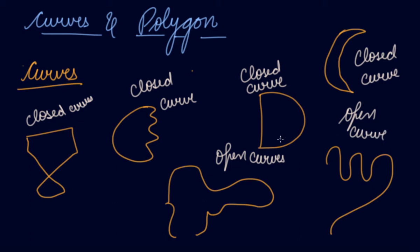Basically, there is some curve or some doodling figures — these are known as curves. If the figure is fully closed, it means it is a closed curve, and if the figure is open, it means it is an open curve.